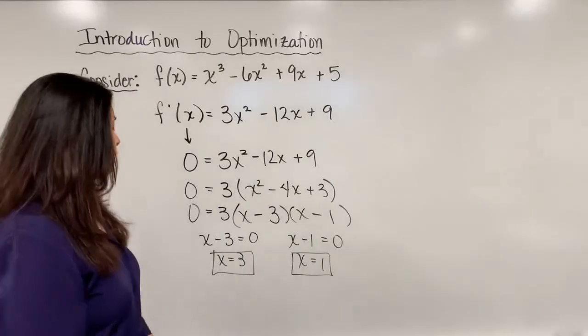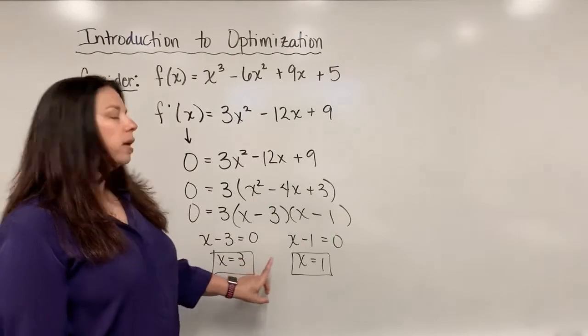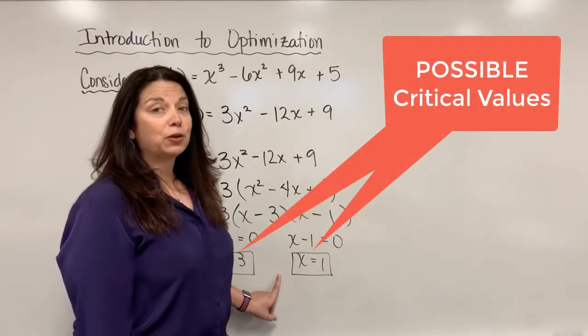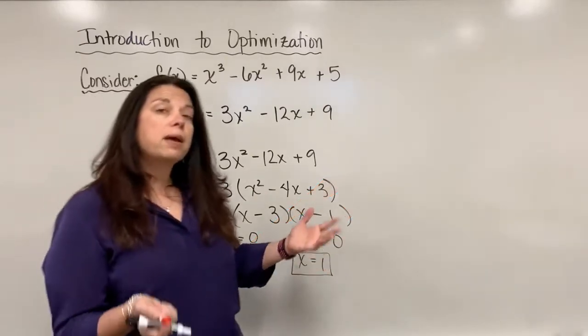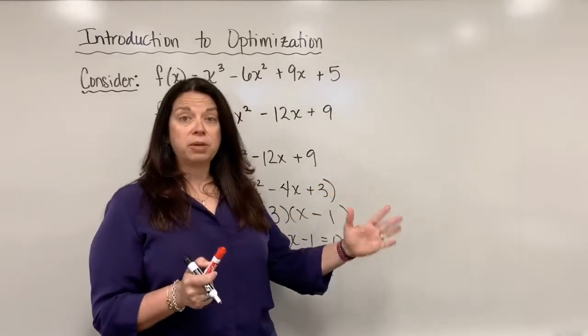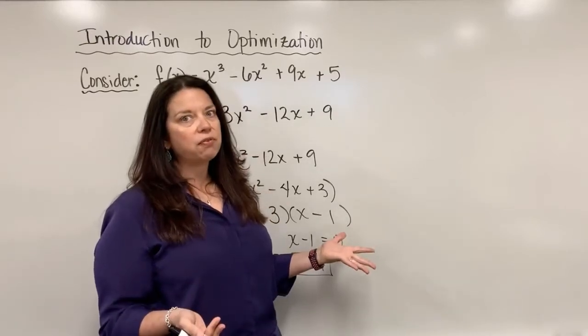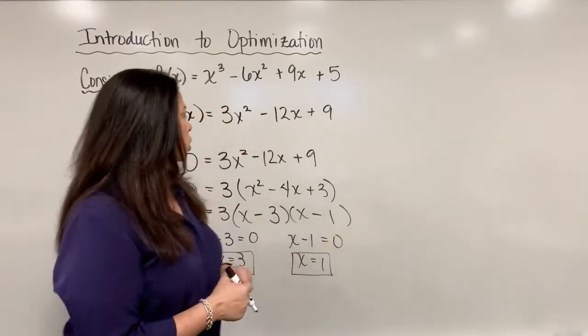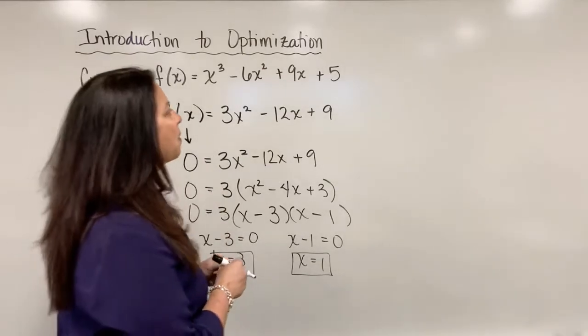And here's what we know. We know that at x equals 1 and x equals 3, these are what we're going to call possible critical values. These are possible critical values where one of them may or may not be a maximum. One may or may not be a minimum. It just depends. But we have to figure out what's what. So the follow-up to this is to do what we call a sign chart.